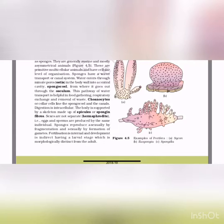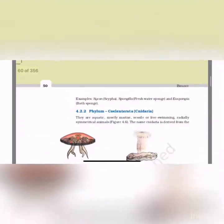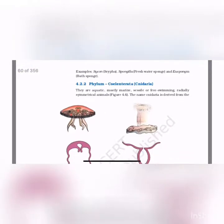Examples of Porifera: Sycon (also called Scypha), Euspongia (also called bath sponge), and Spongilla, which is a freshwater sponge.